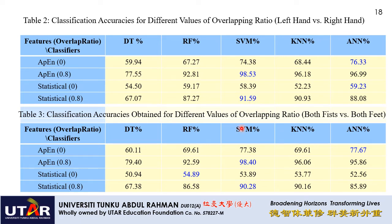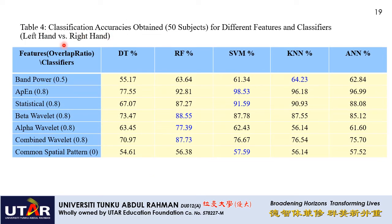The second best result is by statistical features with 80 percent overlapping ratio giving 91.5 percent accuracy using SVM. A similar trend is observed for both fists and both feet classification: the highest accuracy is by approximate entropy with 80 percent overlapping and SVM, giving 98.4 percent accuracy, while statistical features give 90.28 percent accuracy. For left versus right hand, approximate entropy with SVM gives 98.53 percent.